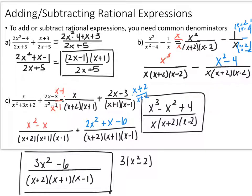To get the common denominator for the first fraction, the denominator needs an x minus 1, so the numerator also gets an x minus 1 — the numerator becomes x squared minus x. The second fraction only needs an x plus 2, so you multiply that into the numerator as well, getting 2x squared plus x minus 6. Adding these together: x squared plus 2x squared is 3x squared, negative x plus x is 0, and then minus 6. I tried to factor this to see if anything would cancel — it won't — so this is the final answer.